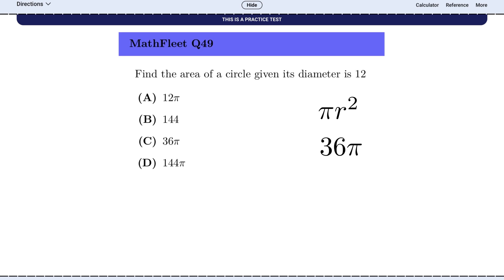Here's the mental strategy. Before you even start solving, look at the answer choices. When you see both 36 pi and 144 pi, a little alarm should go off in your head. That signals a potential radius versus diameter trap. By anticipating the trap before you solve, you arm yourself against it. You're no longer the victim. You're the detective.